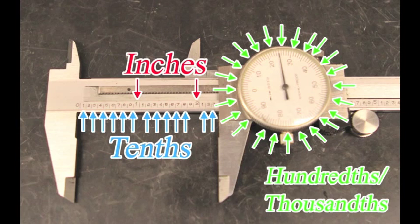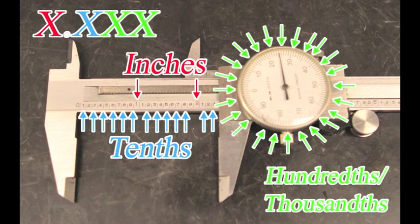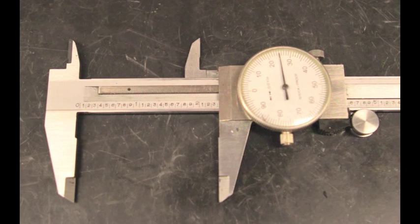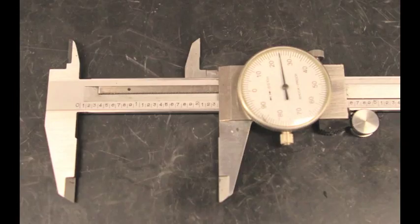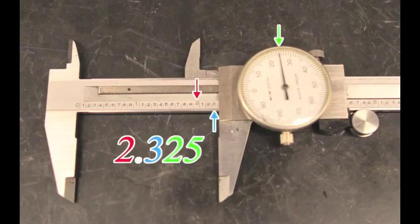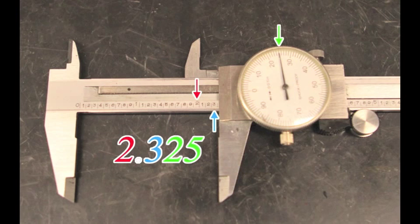When put together, this is how the calipers are read. Let's try one for practice. What is this reading? The calipers read 2.325. Where each number is found is indicated on the screen.